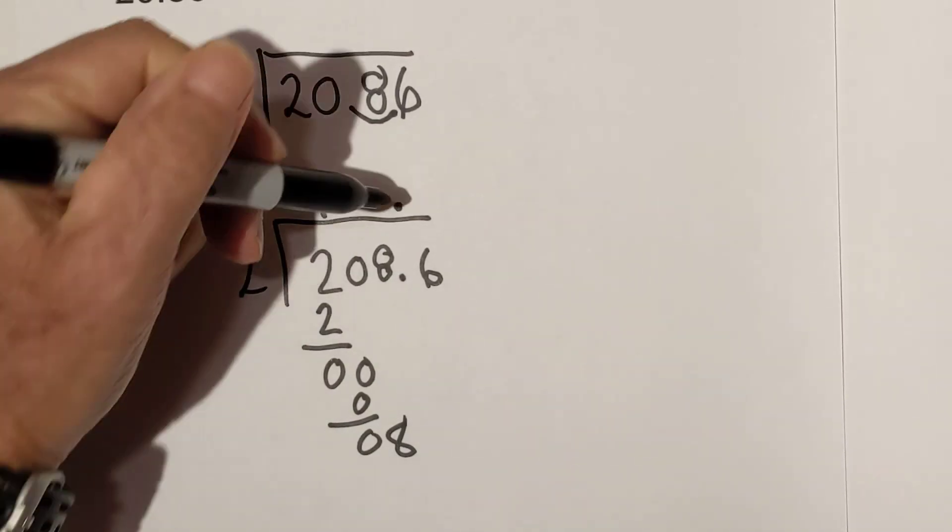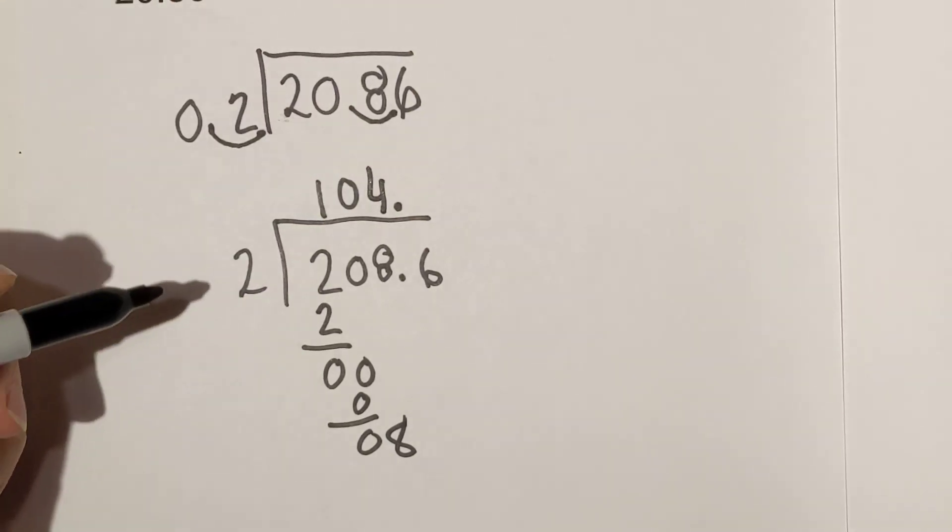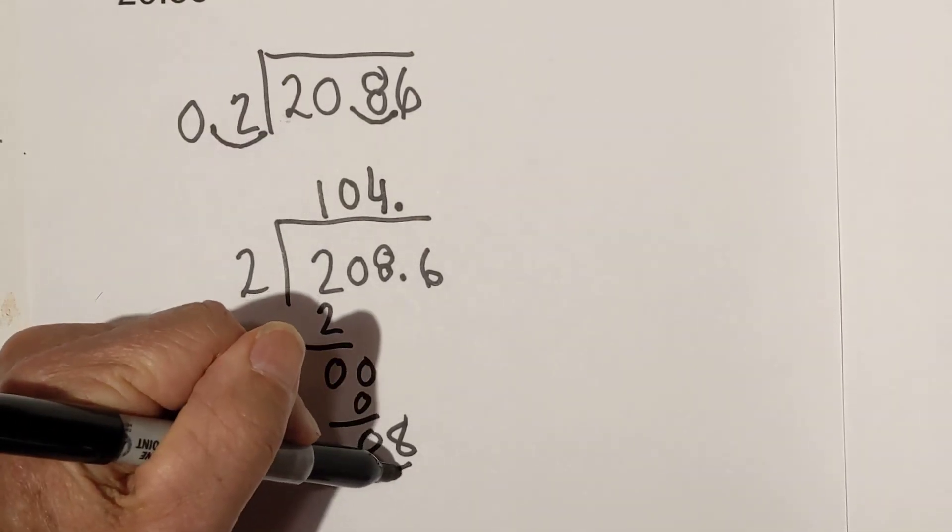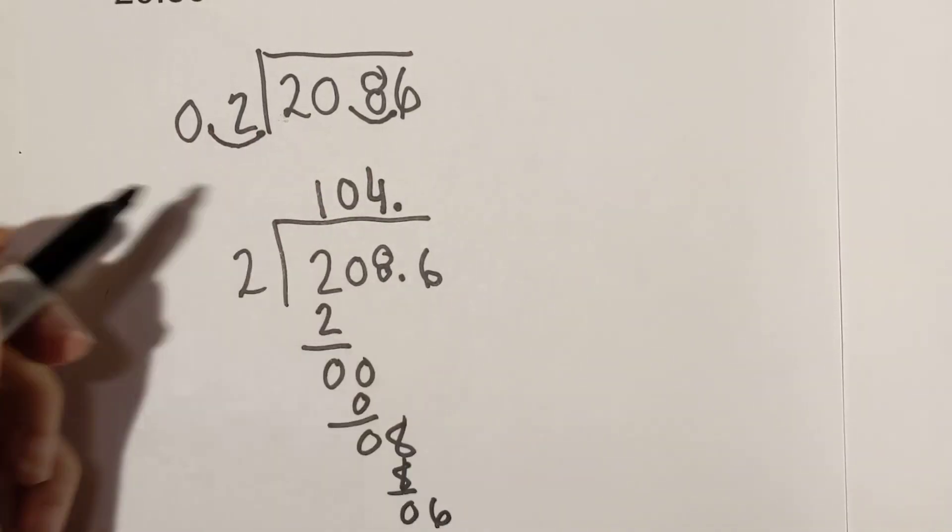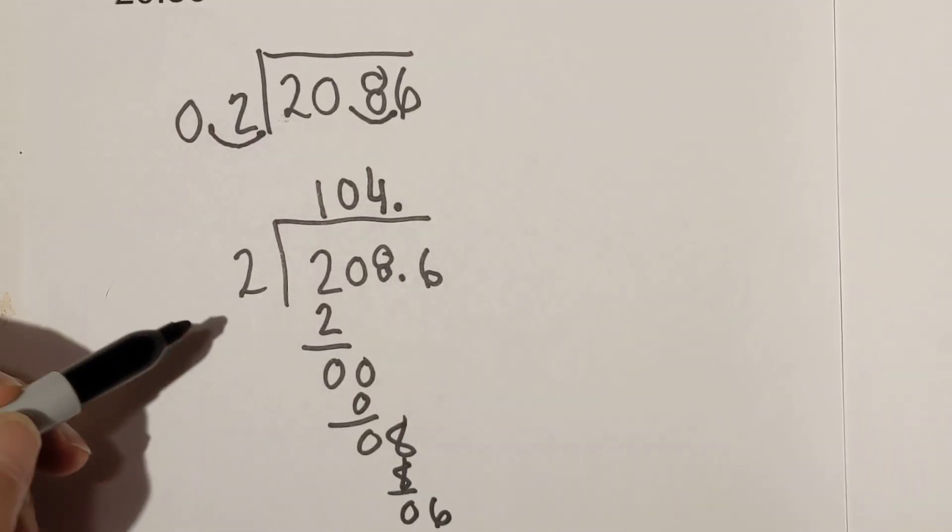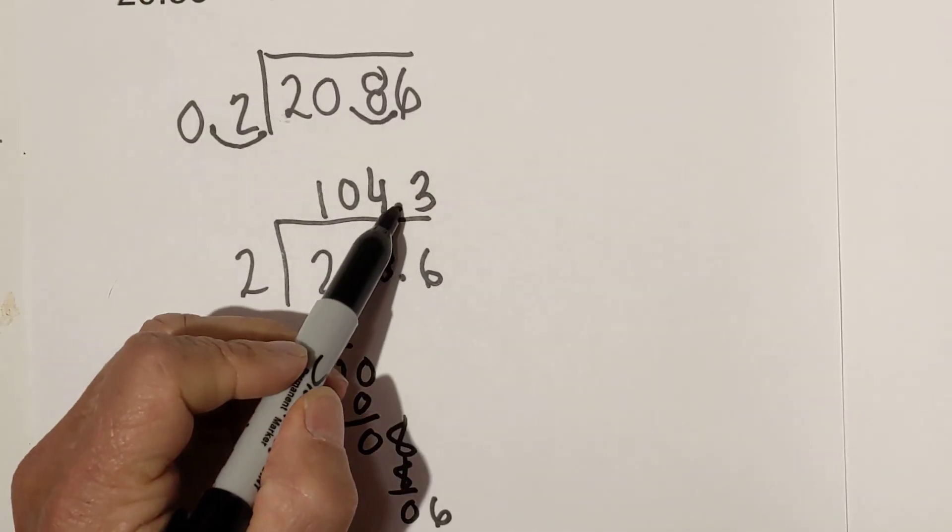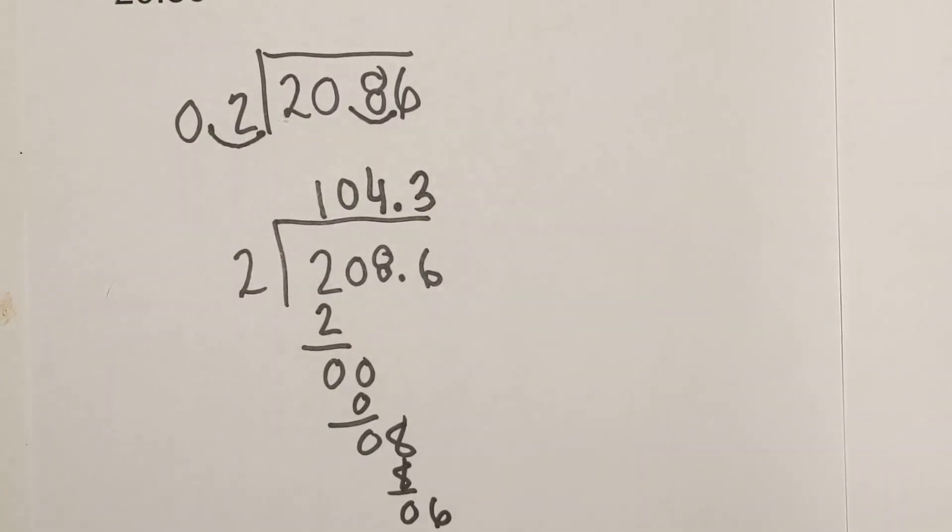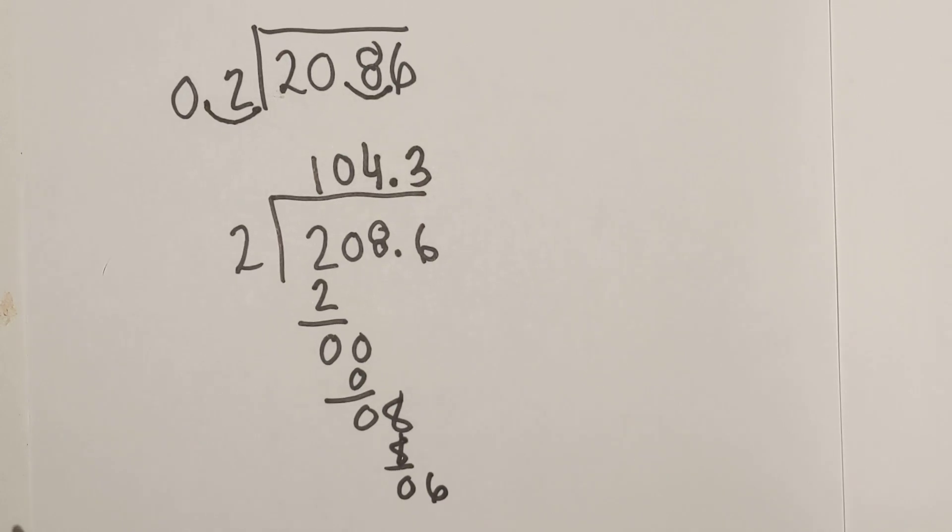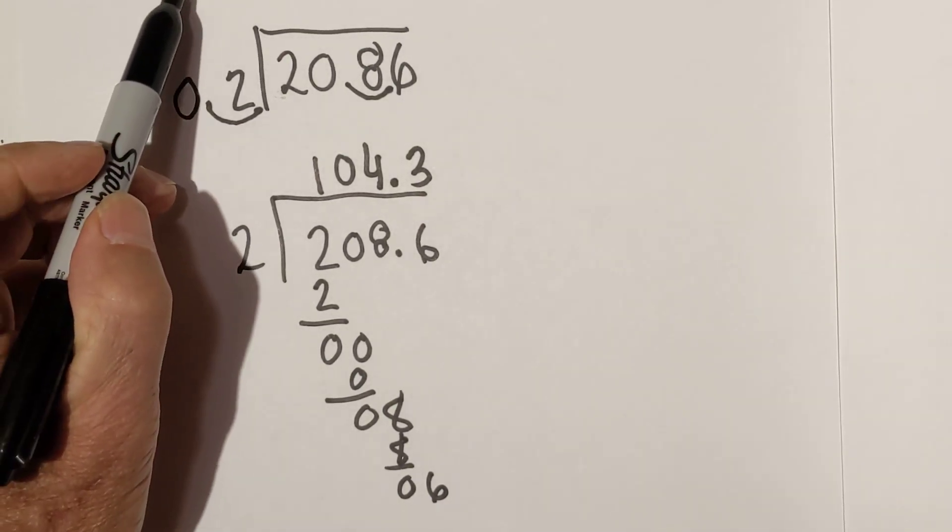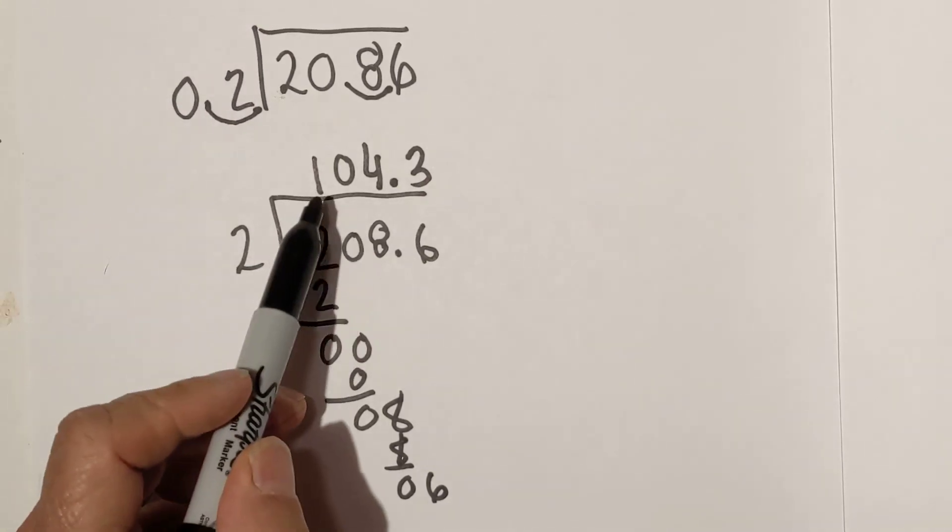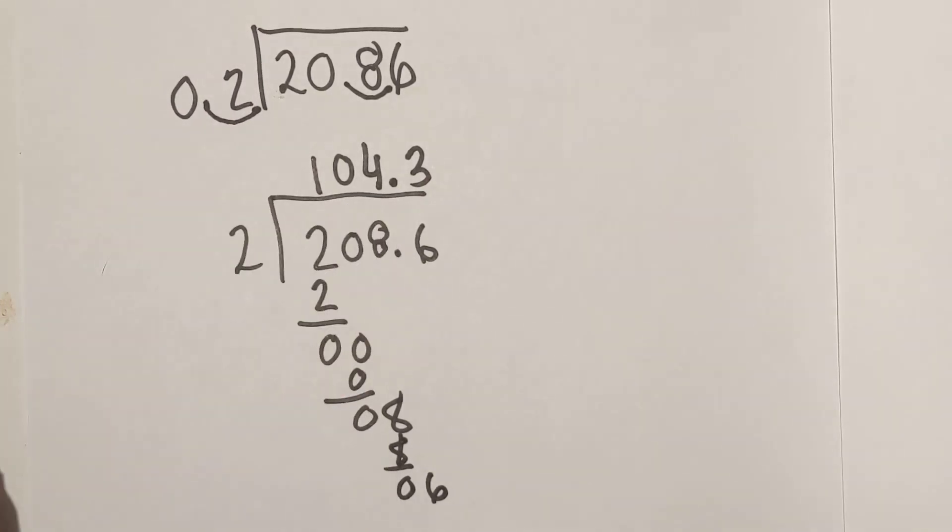And then we bring down the 6. And 2 goes into 6 three times. And remember, you bring the decimal point up. So there we go. So 20 and 86 hundredths divided by 2 tenths is 104.3.